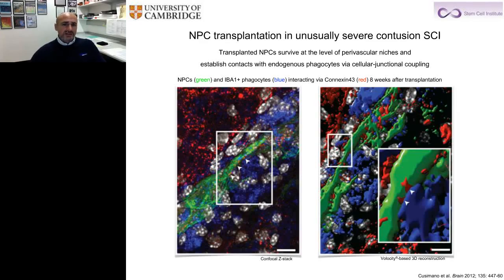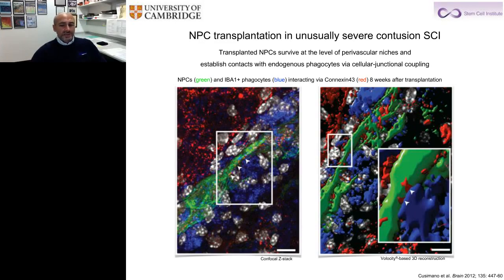To provide less ambiguous confirmation of the cellular junctional coupling between the transplanted stem cell and the endogenous myeloid progenitor cells, we performed confocal data stack microscopy associated with velocity-based 3D reconstruction and deconvolution. This identified a very nice connexin-43-specific cellular junctional coupling between the green transplanted stem cell and the blue host IBA1-immunoreactive professional phagocyte.